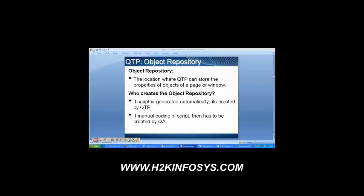All these objects are stored in the object repository. The object repository is nothing but a location where we have all the properties of the objects. What does the object repository contain? It contains the properties of all the objects. If we are recording the script, objects get added automatically. But if we are writing the code manually, then we have to add the objects manually as well. I will tell you later how to write the code manually.